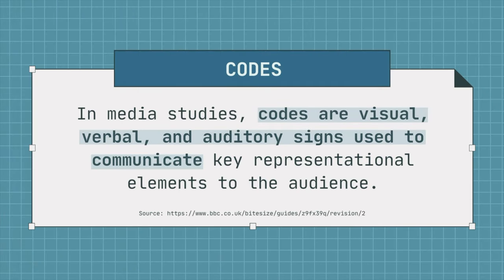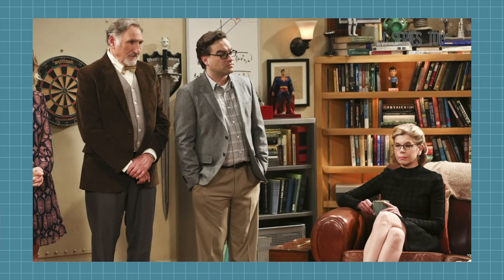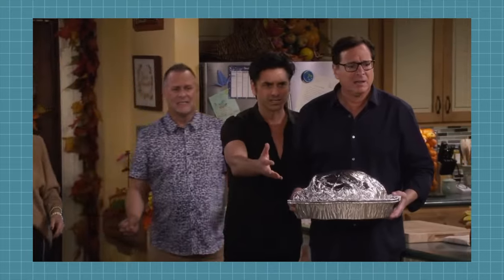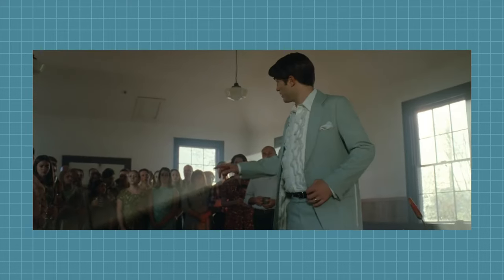So how does the media construct meaning? This process takes place through the use of codes. In media studies, codes are visual, verbal, and auditory signs used to communicate key representation elements to the audience. An example of a visual code could be the way someone is dressed, such as wearing glasses to present them as nerdy or smart. A verbal code could be the language a character uses that presents them as intelligent, or an accent to articulate where they might be from. Codes can also be the way the camera is positioned, or the use of music to make a situation in a scene feel more intense. The key thing to remember with codes is that they serve to communicate the producer's intended meaning, and in order to do that effectively, they must be accepted by the audience. It is this shared acceptance of a particular code that gives it more power and influence.